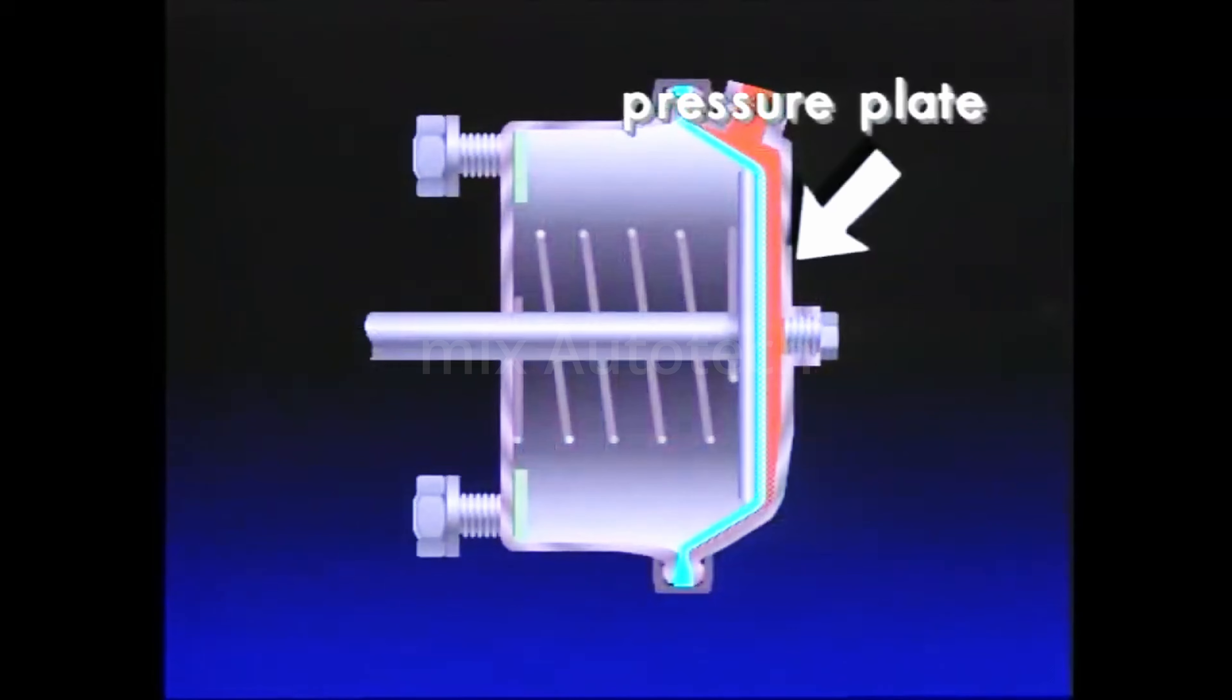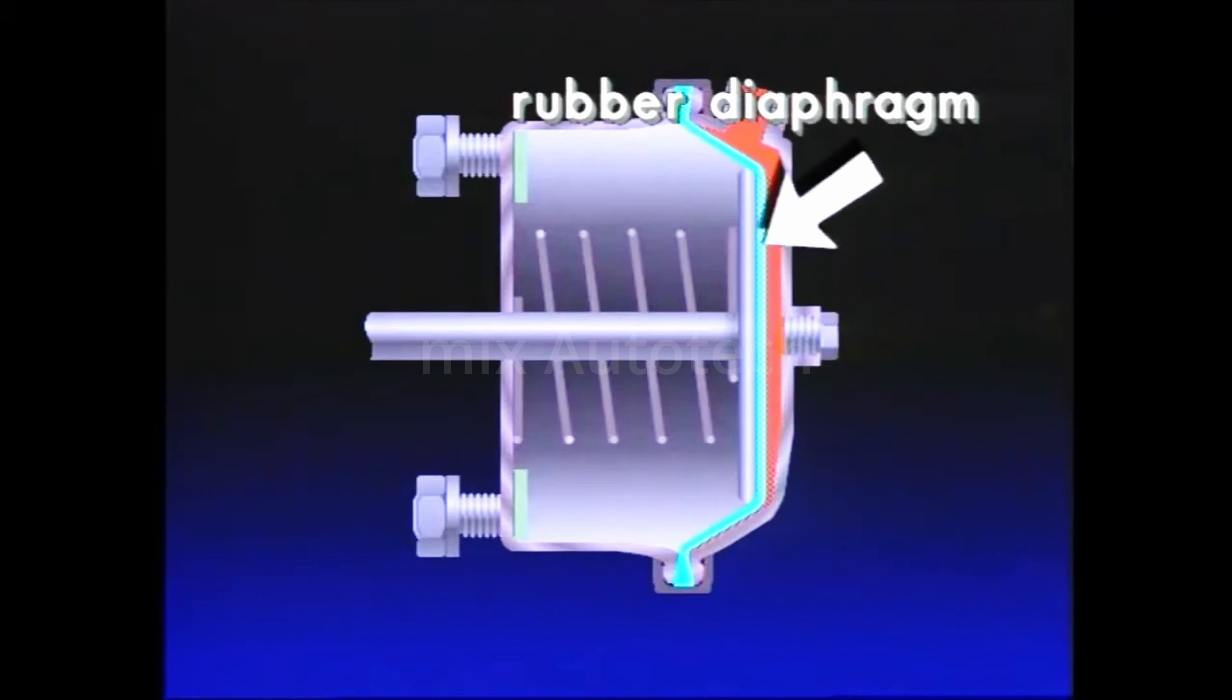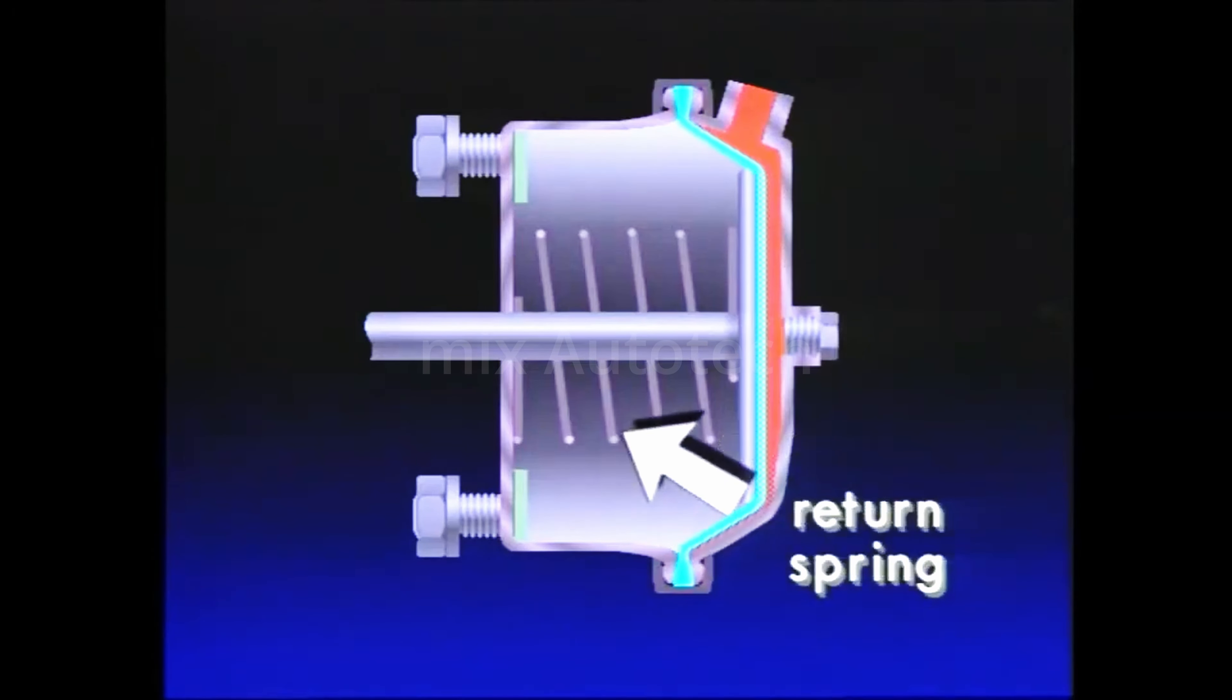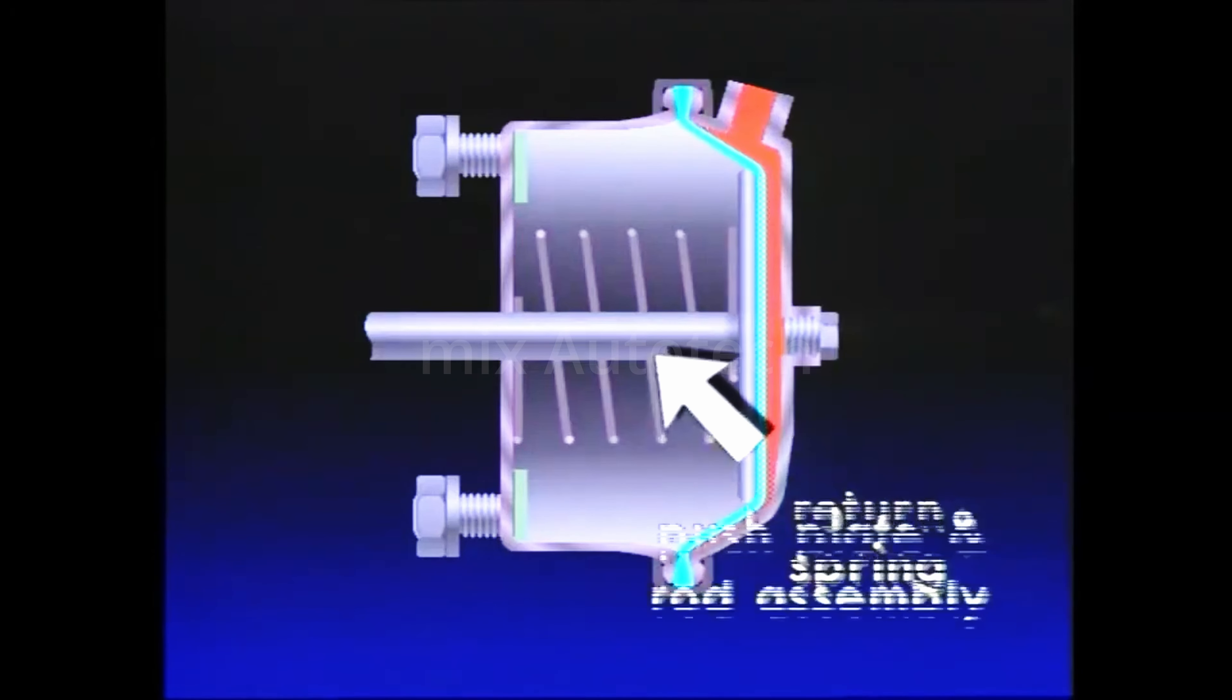The brake chamber has a pressure plate and a non-pressure plate with a rubber diaphragm between them. A channel-shaped clamp ring holds them together. The return spring in the chamber holds the push plate and rod assembly against the non-pressure side of the diaphragm.